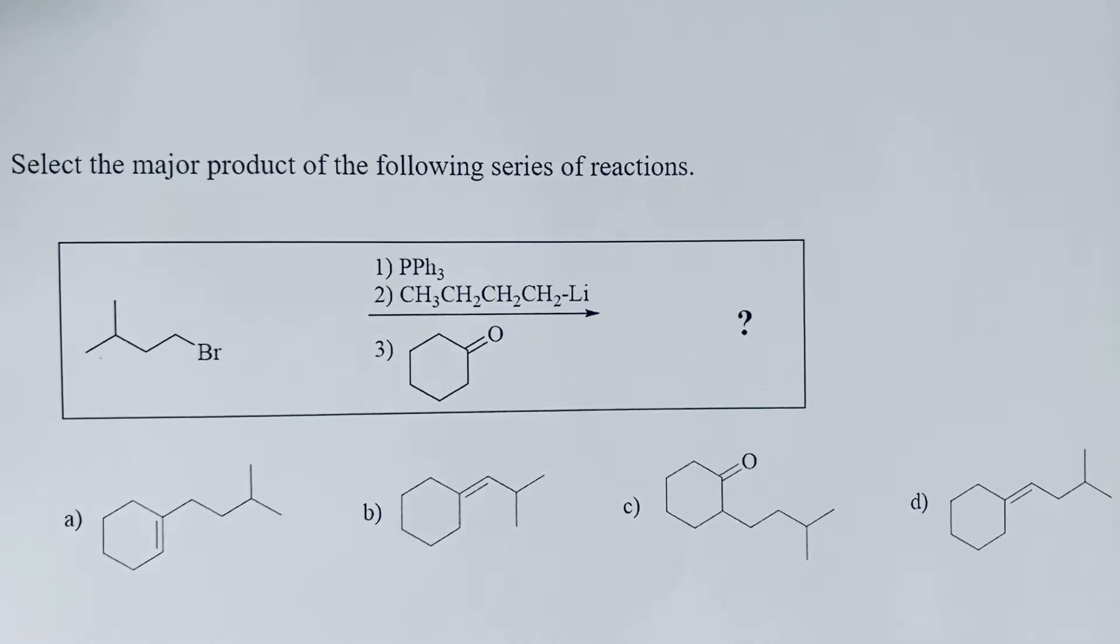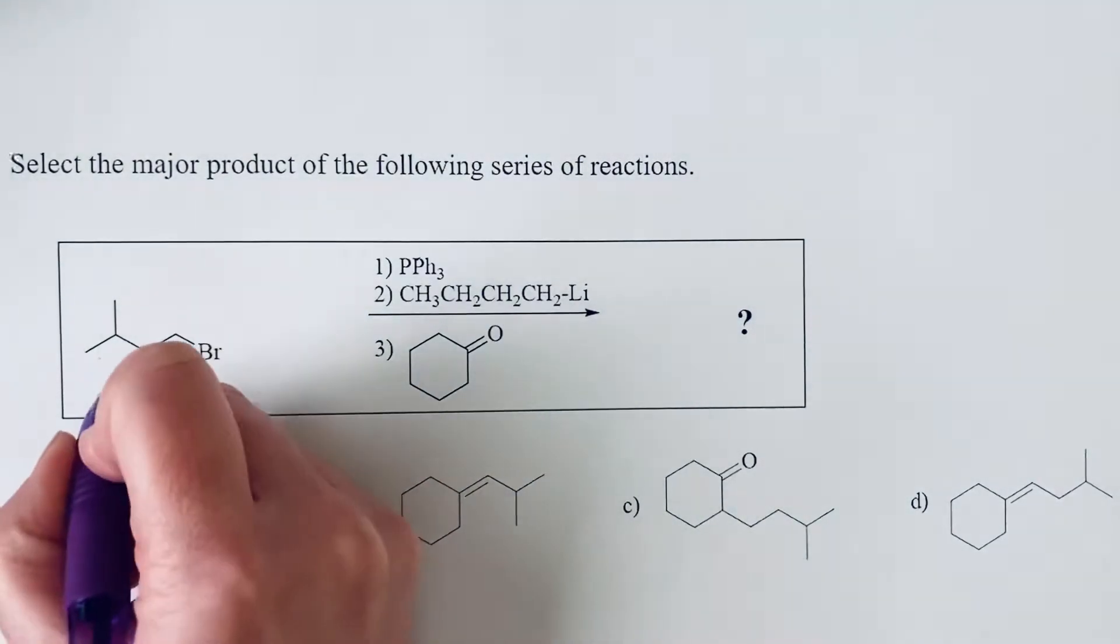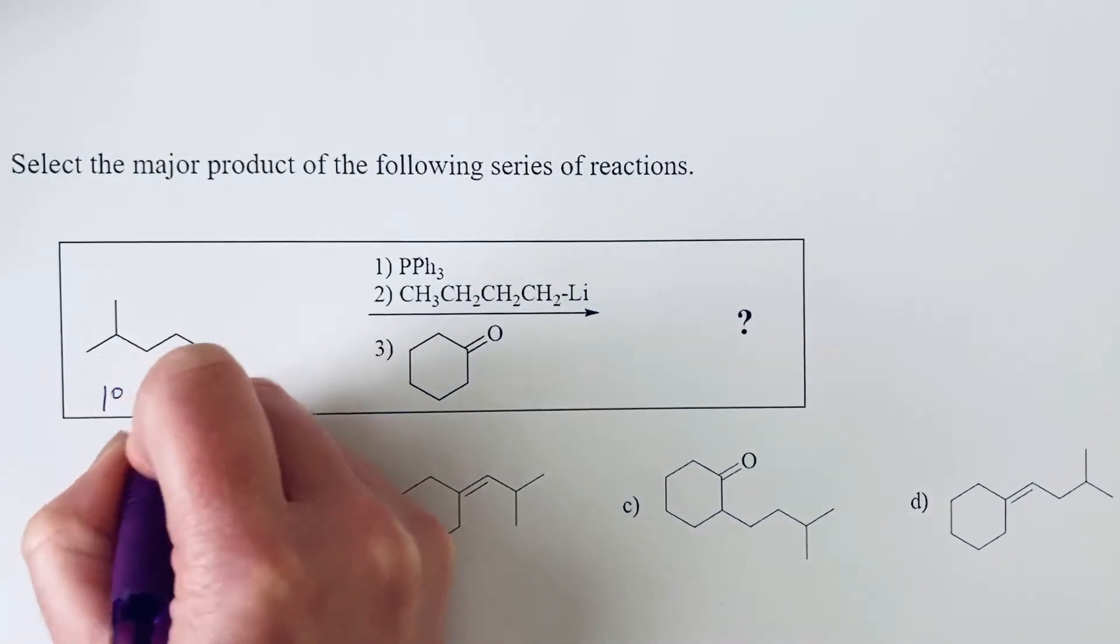Select the major product of the following series of reactions. We want to go through this step by step to see what we're forming at each stage of this mechanism. We are starting with an alkyl bromide, and specifically the bromine is attached to a primary carbon, so we're going to call this a primary alkyl bromide.